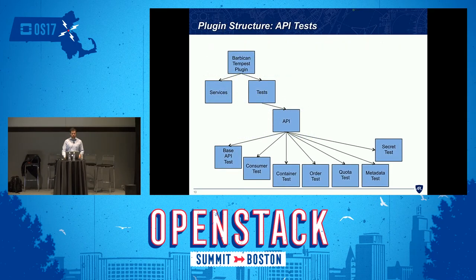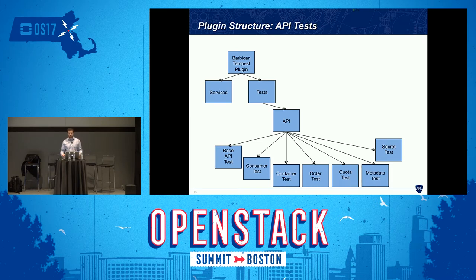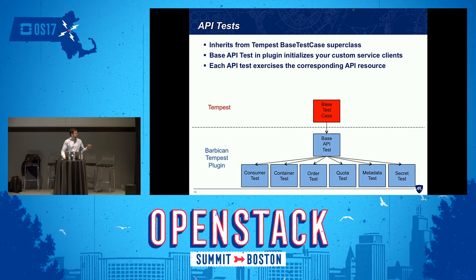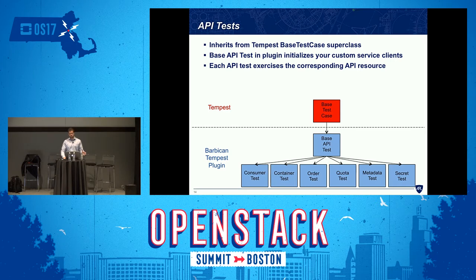Once you have these service clients implemented, you need to test them. The next thing you want to do is implement your API tests. Just as we had a mirroring of service clients to API resources, we have the same thing going on with the API tests — you basically want one test suite corresponding to each resource of your service's API. Here's a diagram to show how these things inherit from Tempest — you're pulling in Tempest's test case interface to set up your API tests. The base API test is not required, but it helps with setup and cleanup of resources and makes writing API tests much easier.